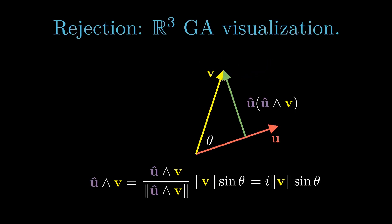The action of the GA rejection operator can be visualized in two dimensions. We decompose the bi-vector u hat wedge v into a unit bi-vector factor, say i, and a scaling factor.